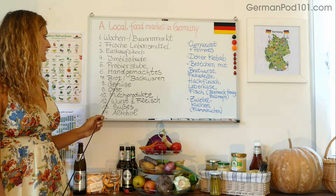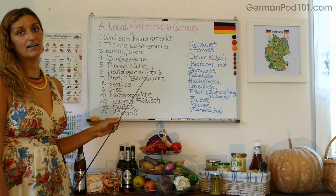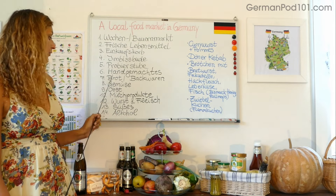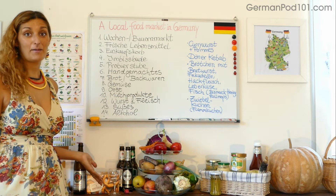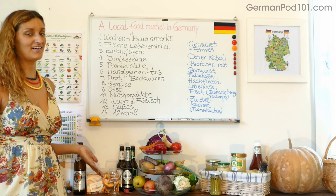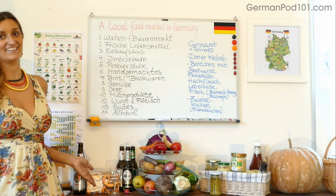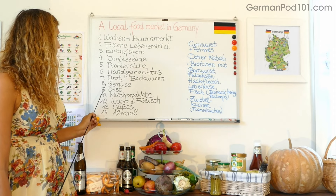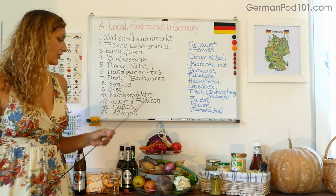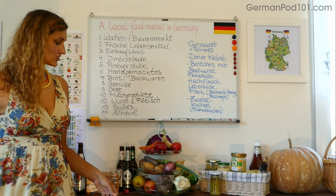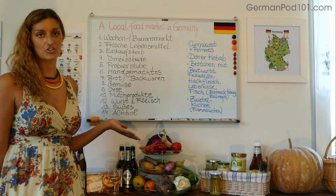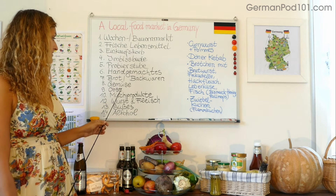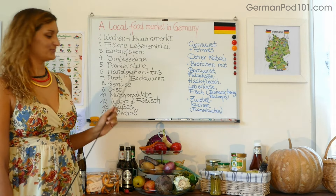Die Nummer sieben ist Brot oder Backwaren — baked goods or simply bread. Ein Beispiel einer typisch deutschen Backware ist die Brezel. Hier habe ich euch eine Brezelbox mitgebracht. Die Nummer acht ist Gemüse. Ich habe euch einen ganzen Stand mit typischen deutschen Gemüse mitgebracht und auch Obst. Gemüse means vegetables, Obst is fruits.